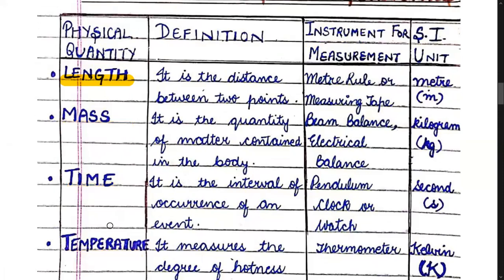The first physical quantity is length. Length is the distance between two points. If I want to find your height, I will find the distance between your head and your foot. The instruments for measuring length are a metre rule — a scale of one metre — or a measuring tape. The standard international unit of length is metre.